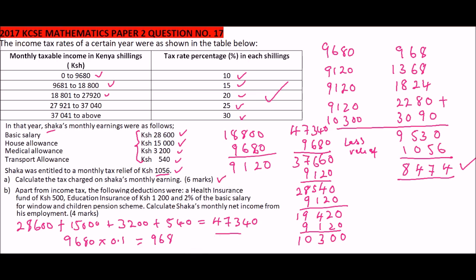For part (b), apart from income tax, additional deductions were made: five hundred shillings for health insurance, twelve hundred shillings for education insurance, and two percent of the basic salary for the widows and children pension scheme. Two percent of twenty-eight thousand six hundred is five hundred and seventy-two shillings. The total of other deductions is two thousand two hundred and seventy-two shillings.